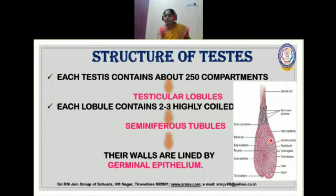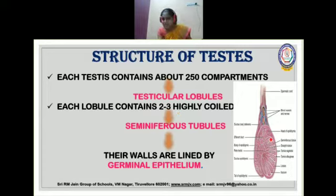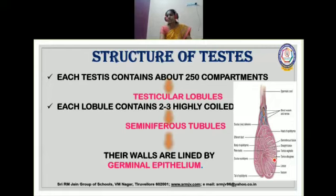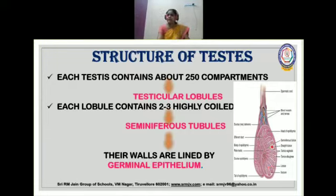Each testis contains about 250 compartments called testicular lobules. Each lobule contains two to three highly coiled tube-like structures. Can you see this coiled structure? These tube-like structures present inside the lobules are called seminiferous tubules, which have an important function. We will now look at the picture showing the internal structure of a seminiferous tubule.